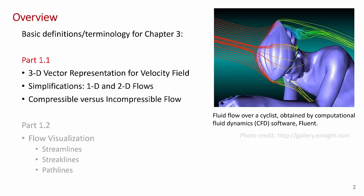I've broken this introduction up into two parts. In part 1.1, I'll talk about the three-dimensional vector field representation for the velocity field, which we talked about a bit in chapter one. I'll talk about some simplifications of the three-dimensional field. Sometimes you can approximate flows as one-dimensional or two-dimensional. And I'll end by talking about compressible versus incompressible flow. In other words, when you need to include the effect of density variations in your analysis of the flow. And in part 1.2, the next presentation, I'll talk about a whole area of fluid mechanics called flow visualization.